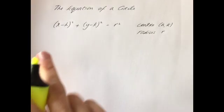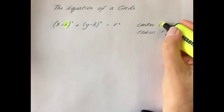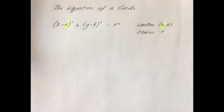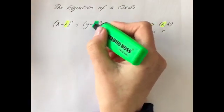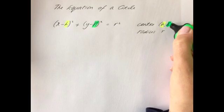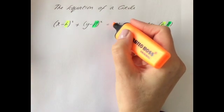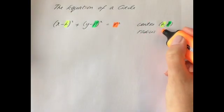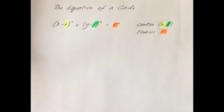It's clear from this that the two pieces of information you need are the center — your x-coordinate, standing for h, and your y-coordinate, your k — and your radius. The radius length is also needed whenever you're looking for the equation of a circle. Let's jump into some examples and see how we can go about finding the equation of a circle when given these two pieces of information.